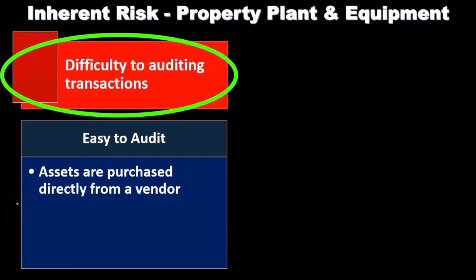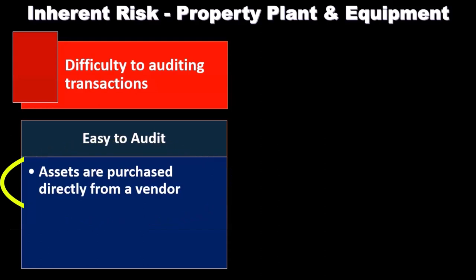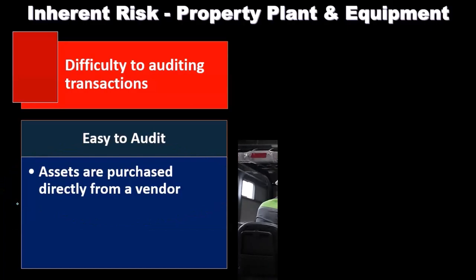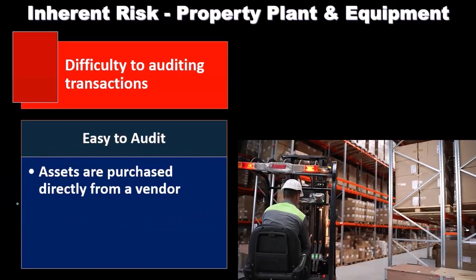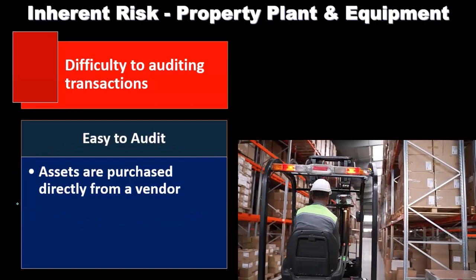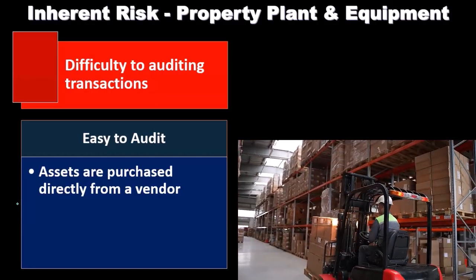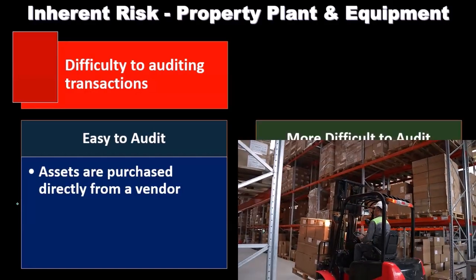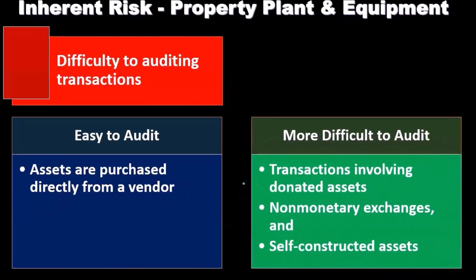The easiest type of transaction to audit is an asset purchased directly from a vendor. For example, if a company bought a forklift or a large piece of equipment directly from a vendor or a store, that's a pretty straightforward transaction. Even if it's material and warrants attention, it's not too difficult to audit.